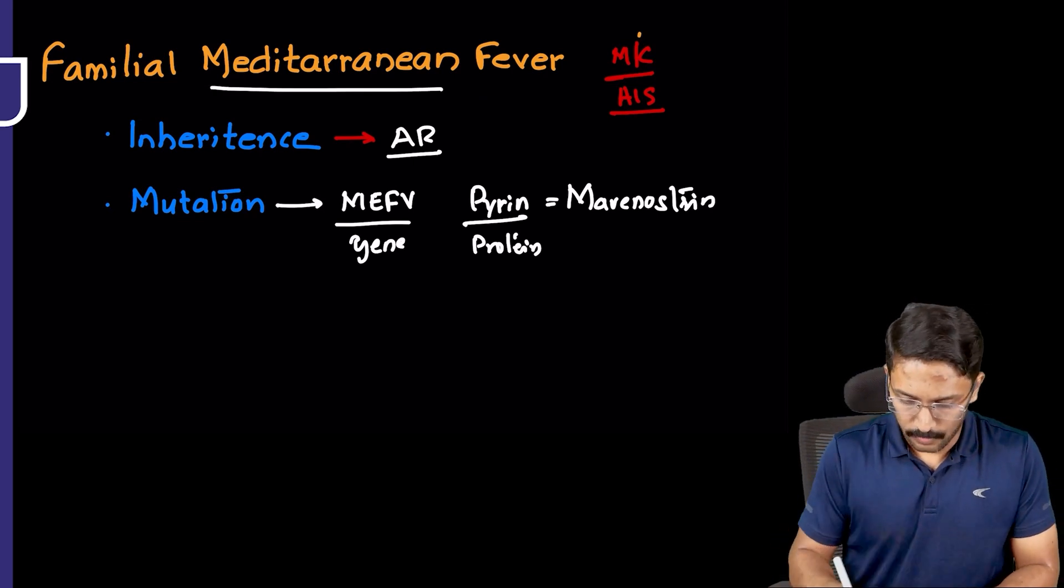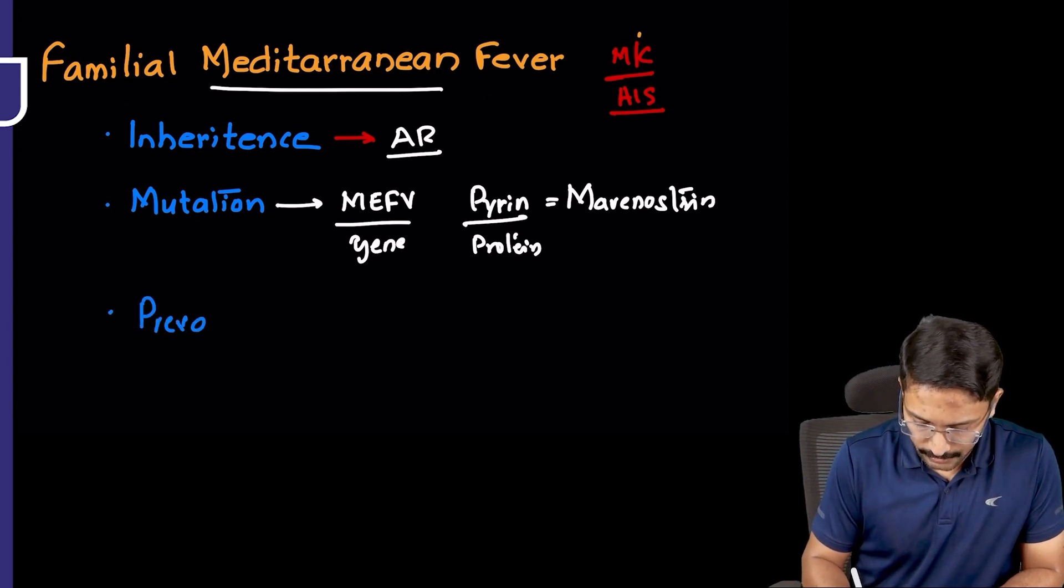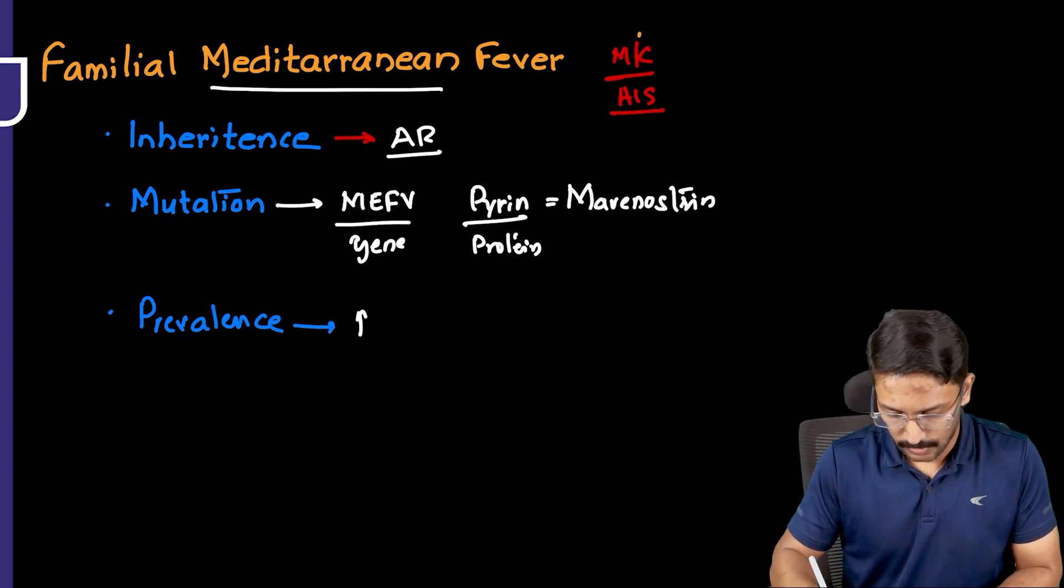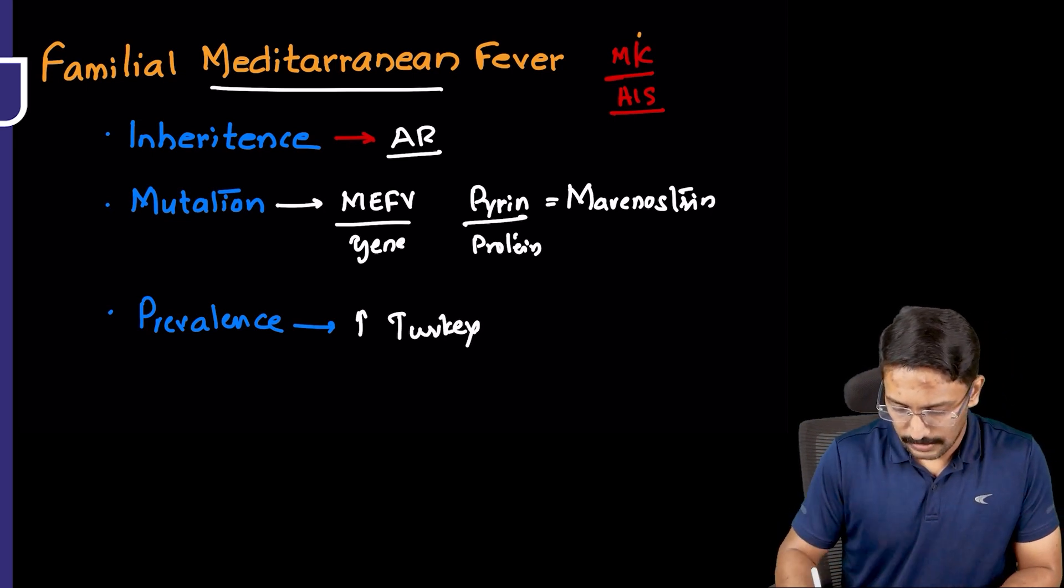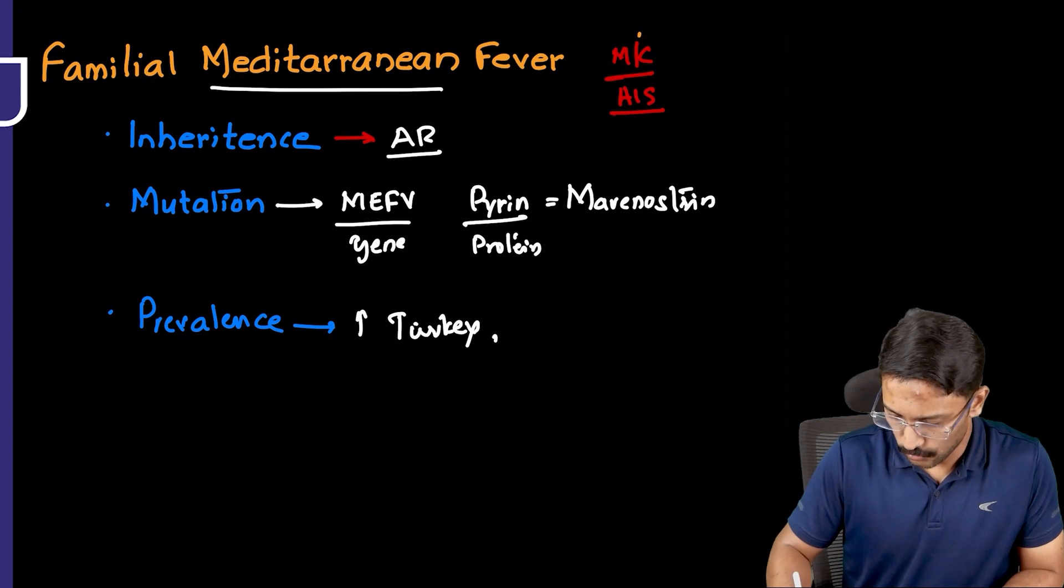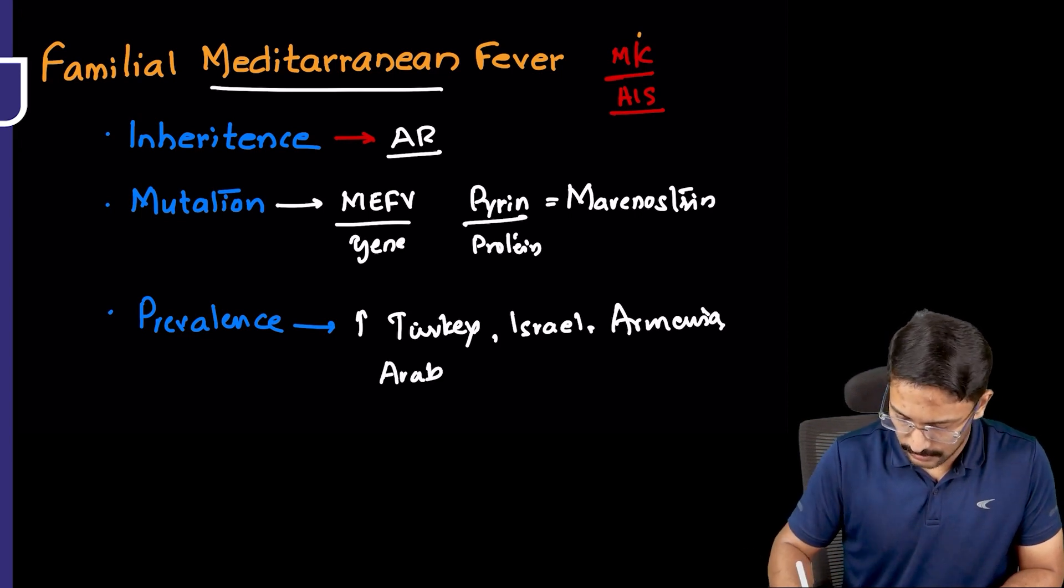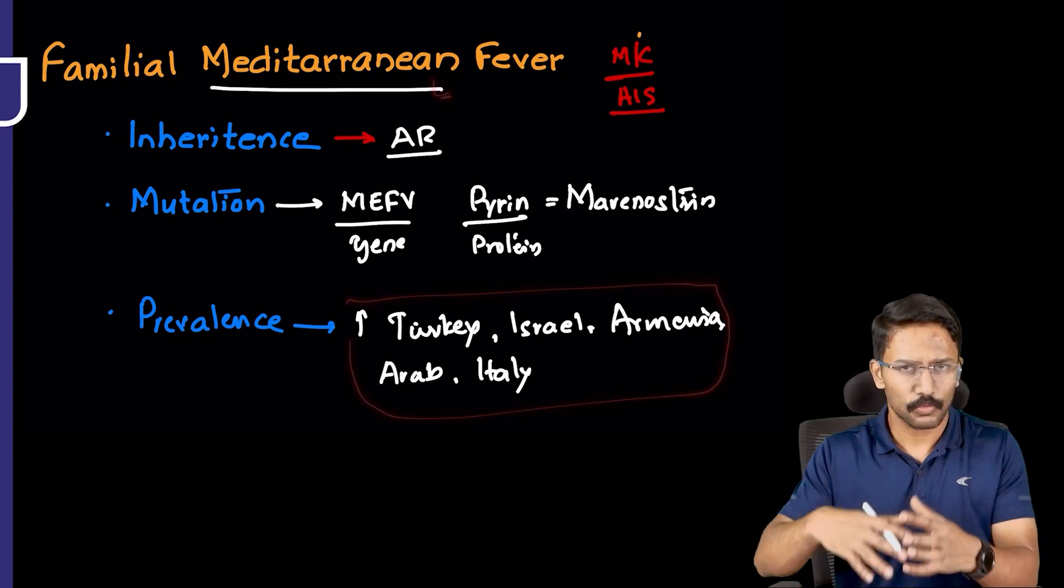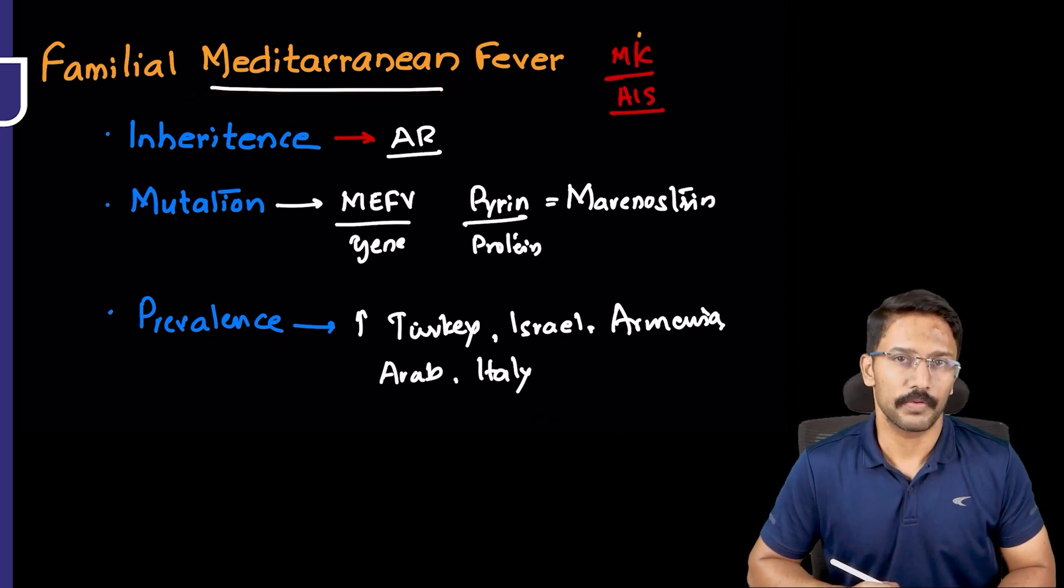Why is this called Mediterranean fever? Because in terms of prevalence, high prevalence is seen in countries around the Mediterranean Sea. Important countries: Turkey, most patients are from Turkey. Second is Israel, Armenia, then Arab world countries and Italy. These countries are situated around the Mediterranean Sea, that's where the name Mediterranean fever comes from.